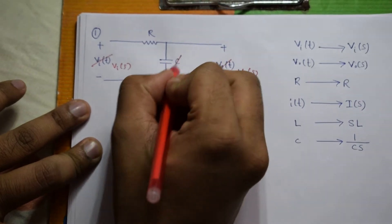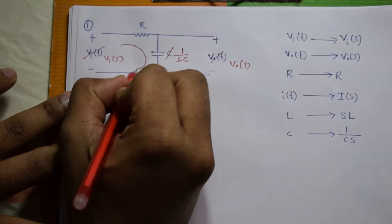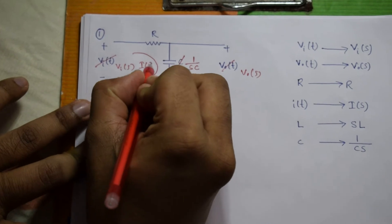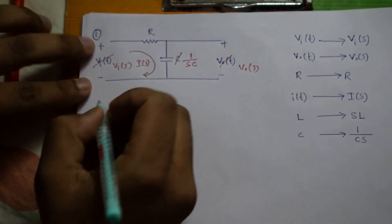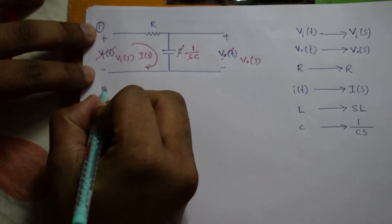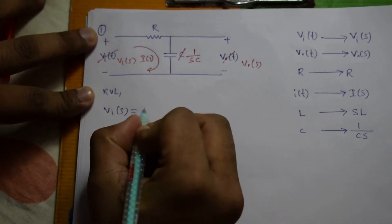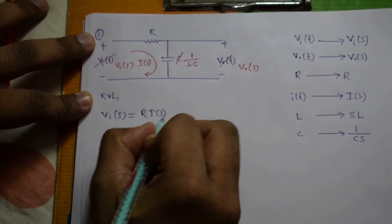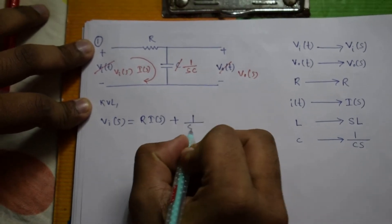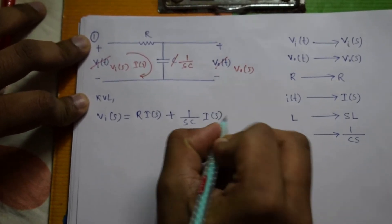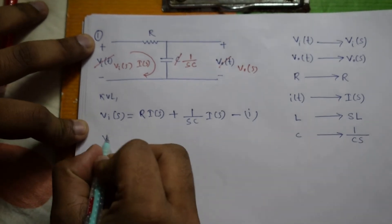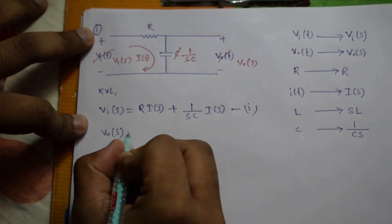So Vi(t) will be transferred to Vi(S), Vo(t) will be Vo(S), R will remain as R only, C will be 1 by SC, and the current in this loop will be I(S). So if I write the KVL equation: Vi(S) equals to R into I(S) plus 1 by SC into I(S). This is our first equation.